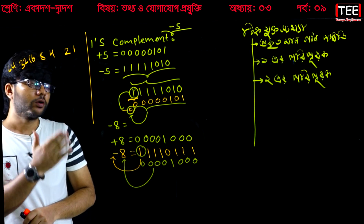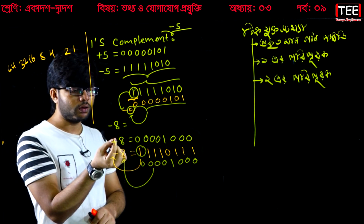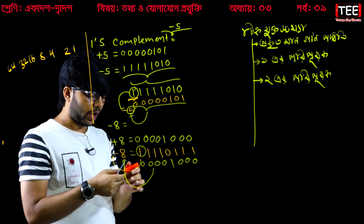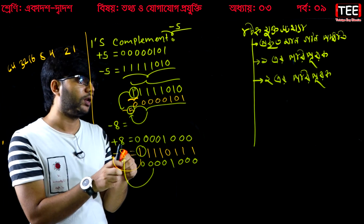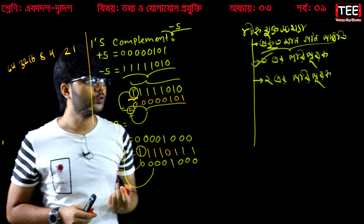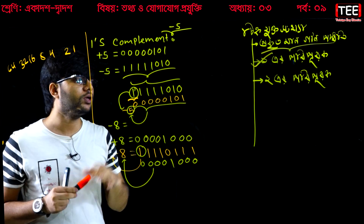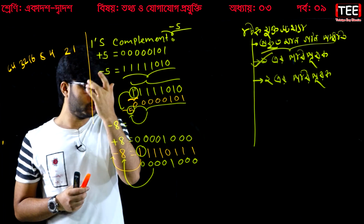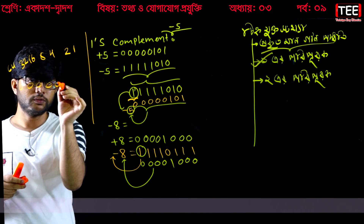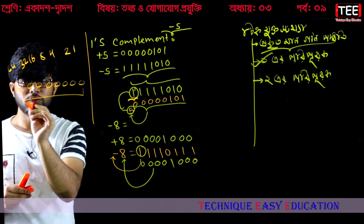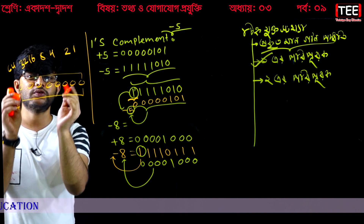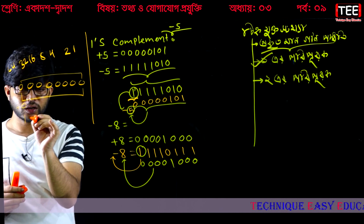So the computer, once complement the form — first of all, that positive value does not mean that. That is the same thing. But the computer, once complement the form, does not use this one. Because the problem exists — the same problem exists. This is the same problem.